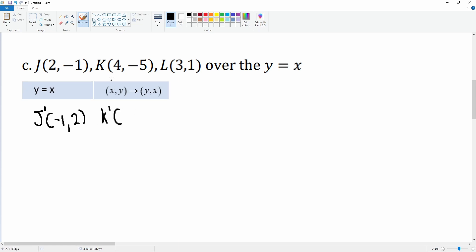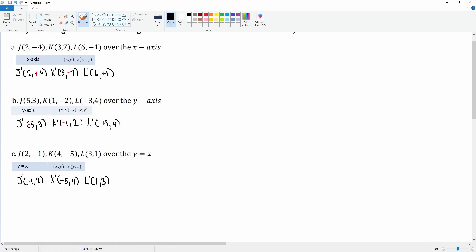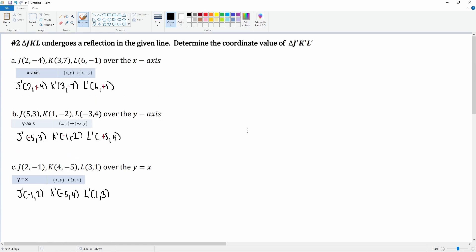K prime originally it was 4 comma negative 5, but now the negative 5 goes in front. Then lastly, L prime, it was originally 3 comma 1, now it is 1 comma 3. So these are your new points based on the transformation rules on the reflection.